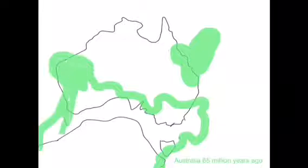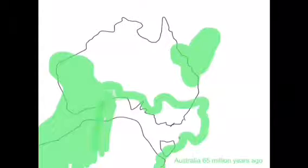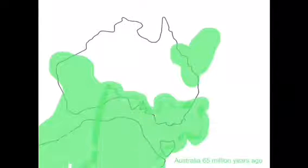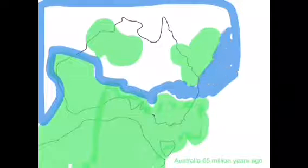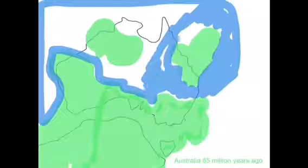A million years ago, a further increase of temperature in the world caused sea levels to rise. The result of this was that Australia turned into a group of islands, as the sea called the Eromanga Sea submerged parts of Australia.